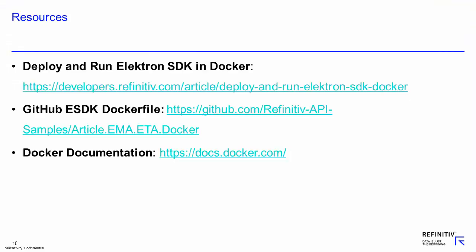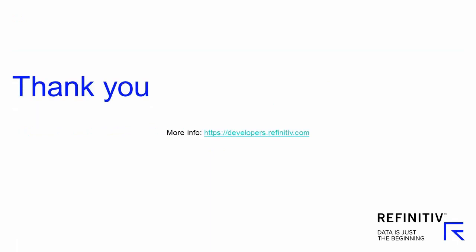Now you should be able to install Docker, build the Elektron SDK Docker image, and run Docker containers from that Docker image. For more use case scenarios or information, please refer to these resources. Thank you for watching.